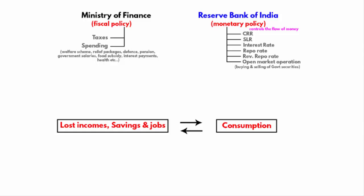However, the government has to decide which problem needs to be addressed first. It will focus on everything, but on a priority basis, it has to focus on one problem at a time. Any steps or policy changes regarding employment, savings, and investments will take some time to show any noticeable effect. But consumption means demand — if consumer spending increases, that will increase demand, and if demand increases, businesses will kickstart to maintain supply.